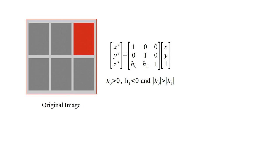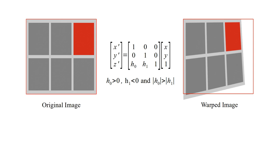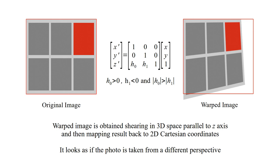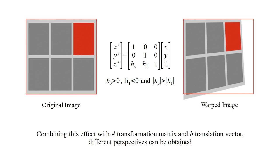This is the original image, this is the transformation equation, and this is the transformed or warped image. The warped image is obtained by shearing in 3D space parallel to the Z axis and then mapping the result back to 2D Cartesian coordinates. It looks as if the photo is taken from a different perspective. Combining this effect with the A transformation matrix and B translation vector, different perspectives can be obtained.